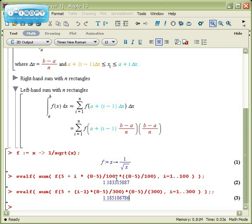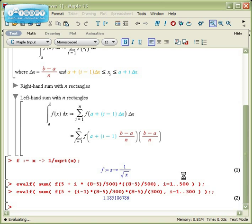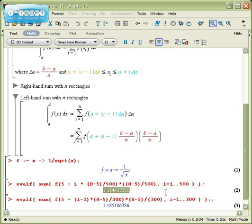One useful aspect of writing it like this, as opposed to using other commands, is if you wanted to use more rectangles - say 500 rectangles with the right-hand endpoint - all I'd have to do is change the three instances of the number of rectangles to 500. If I rerun the command, now I have 500 rectangles with a right-hand rule. That's the very basics of using Maple for a Riemann sum.